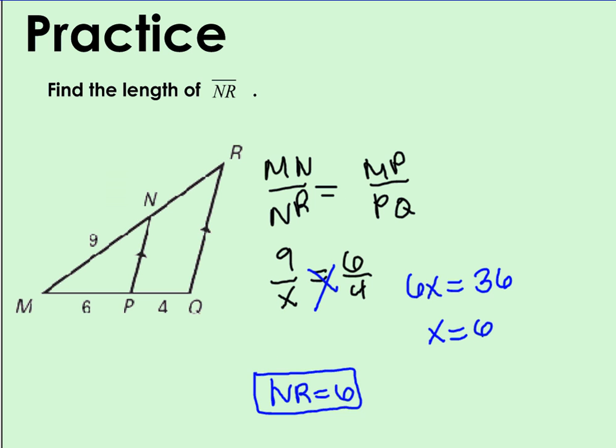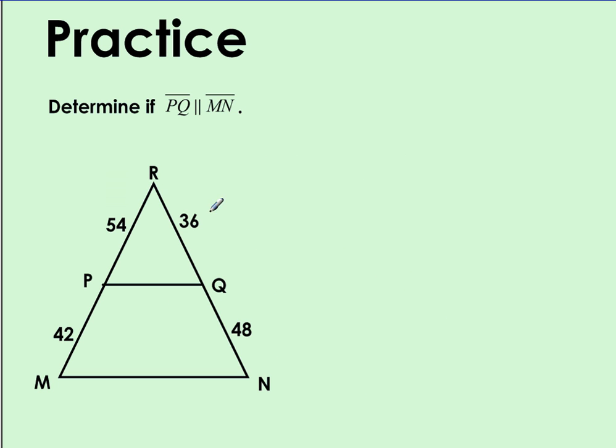We can also use this with the converse as well. And here we're asked to determine if PQ and MN are parallel. And I'm given the side lengths. If I say that the side lengths are proportional, then I can say that those lines are parallel.